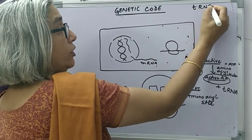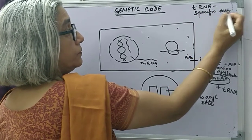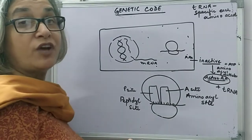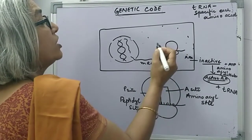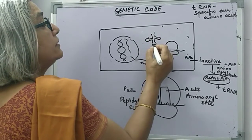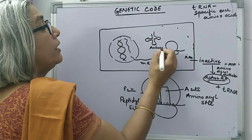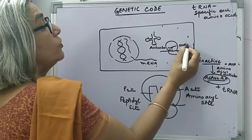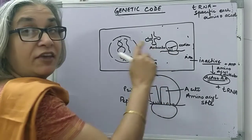These tRNA molecules are specific for each amino acid. So if there are 20 amino acids, there are 20 kinds of transfer RNAs in the cytoplasm. Each transfer RNA is a cloverleaf structure. It has three unpaired nucleotide sequences called the anticodon. The anticodon pairs with the codon on the mRNA. So for each codon, there is a specific transfer RNA.